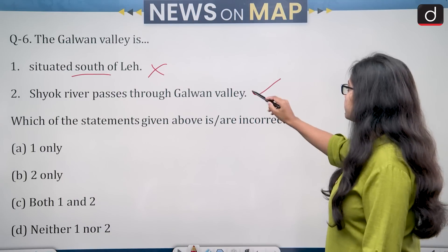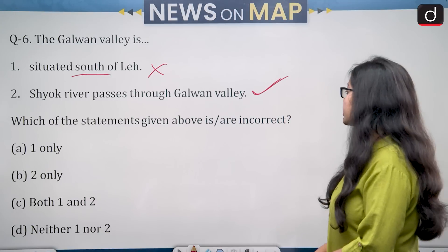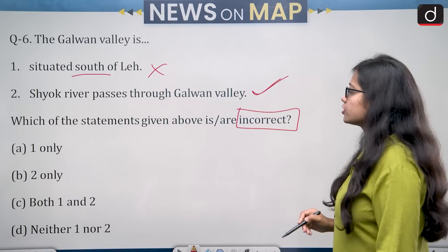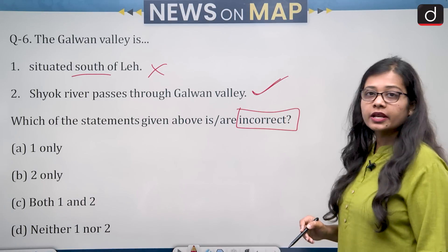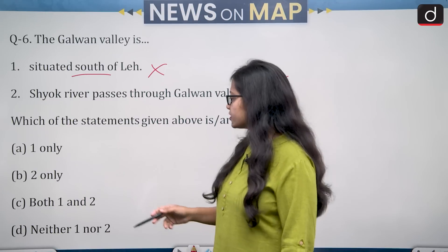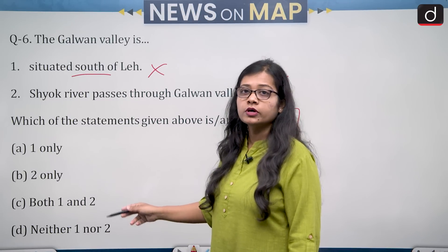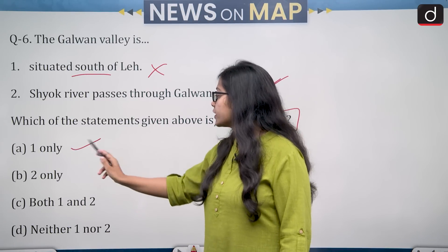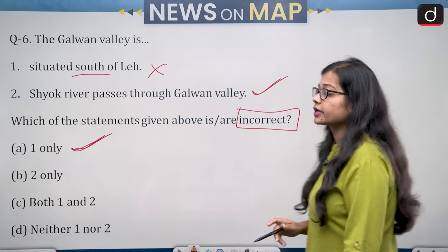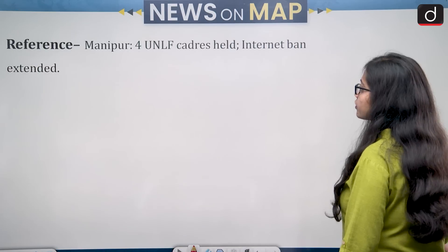The question asks which of the statements given above are incorrect. The first statement is incorrect. The options are: one only, two only, both one and two, or neither. The correct answer is one only — statement one is incorrect.